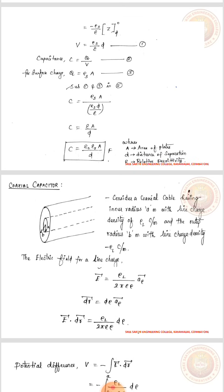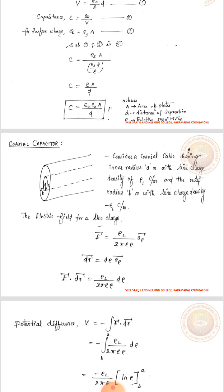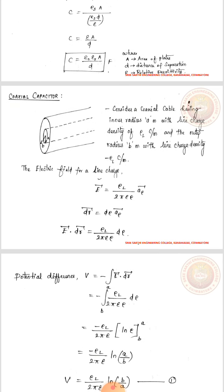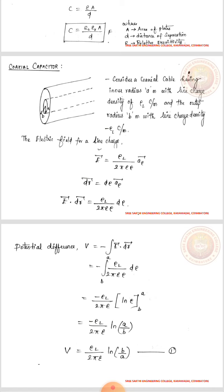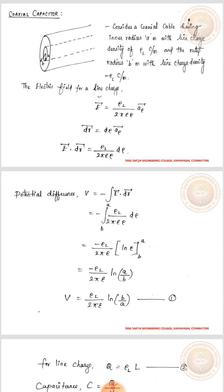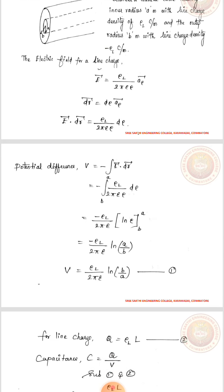Next, coaxial capacitor: Consider a coaxial cable having inner radius a with a line charge density of rho_l and outer radius b with a line charge density of minus rho_l. The electric field for a line charge is given as E vector equals rho_l divided by 2 pi epsilon rho into a_rho vector. The dR vector is equal to d rho into a_rho vector. Applying in the potential difference formula, V equals minus integral from a to b of E vector dot dR vector, and integrating we get minus rho_l by 2 pi epsilon times ln of a by b.